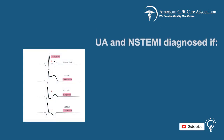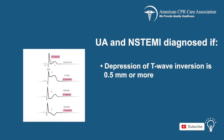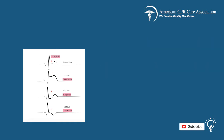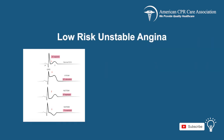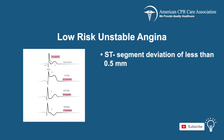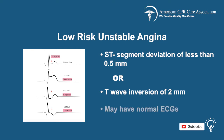Unstable angina and NSTEMI are diagnosed with a depression of the T wave inversion of 0.5 mm or more. Low-risk unstable angina is an ST segment deviation of less than 0.5 mm or a T wave inversion of 2 mm. Patients with low-risk unstable angina may also have normal ECGs.